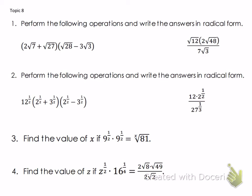Here we go with number one. The first thing you would notice is that we have a radical 27 in the first binomial. You can factor that into 9 times 3 because 9 is a perfect square and we are trying to simplify the square root of 27. The square root of 9 is 3, but the radical 3 — not a perfect square — stays under the radical. Likewise, the square root of 28 becomes radical 4 times radical 7; the square root of 4 is 2, and the 7 stays under the radical sign.